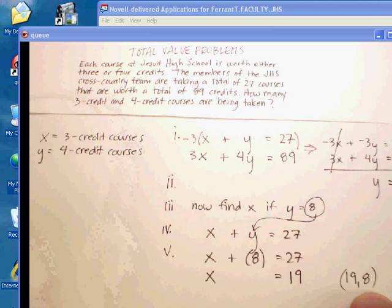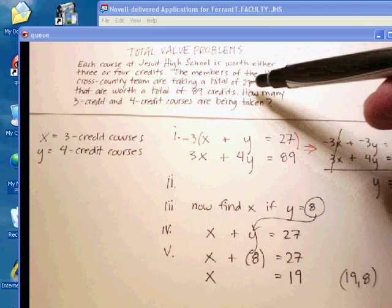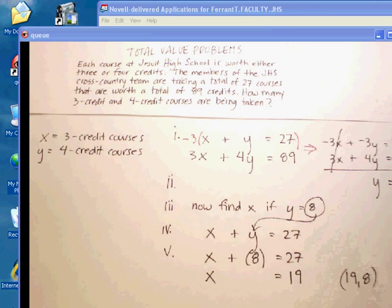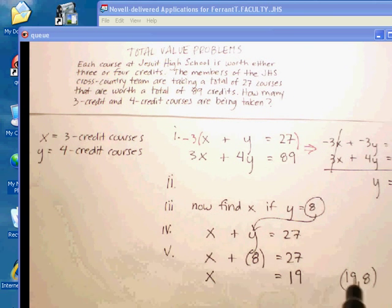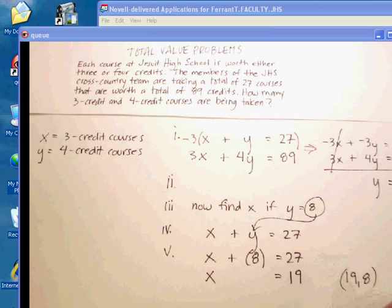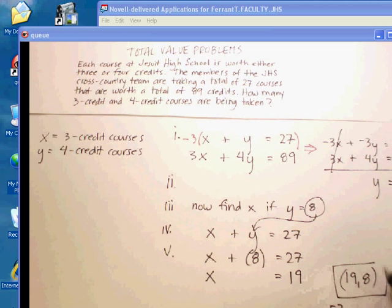Let's see if that adds up to these values in our problem. 19 plus 8 equals 27 for a total of 27 courses. So that checks. 3 times 19 is 57, 4 times 8 is 32 for a total of 89 credits. And, sure enough, it matches my original problem. So my answer is 19-8: 19 three-credit courses, 8 four-credit courses.